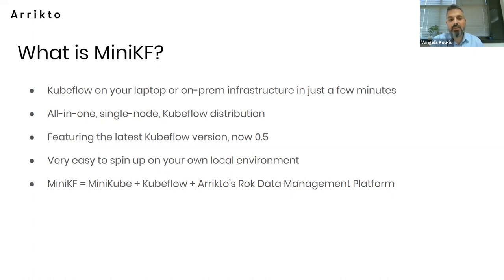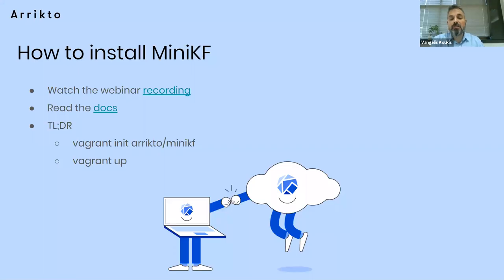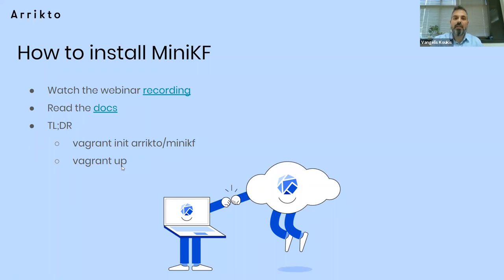You run a single simple command and you have virtualized Kubernetes plus Kubeflow plus Aricto's ROC data management software running on a single machine — on your laptop. This is meant to make onboarding new users to Kubeflow as easy as possible. You essentially get yourself from nothing to the Kubeflow dashboard within 10 minutes. To install Mini-Kubeflow: you watch last week's recording, read the docs, or: initialize Vagrant with a box that we produce, start your machine, and you'll be guided through the installation process to have Kubeflow up and running within 10 minutes.